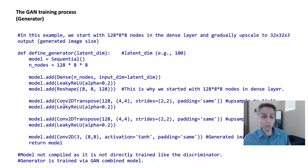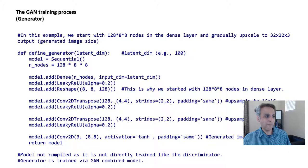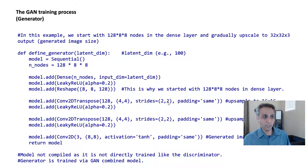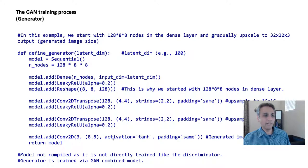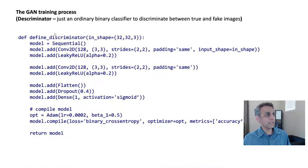Then I apply transposed convolution (think of it as upsampling) with 128 filters. With a kernel size of 4x4 and stride 2x2, the 8x8 becomes 16x16. Doing the same operation again gives 32x32x128. Finally, a convolution layer gives us 3 channels — 32x32x3 — using a tanh activation. The generator is not compiled here because it's trained via the combined GAN model.